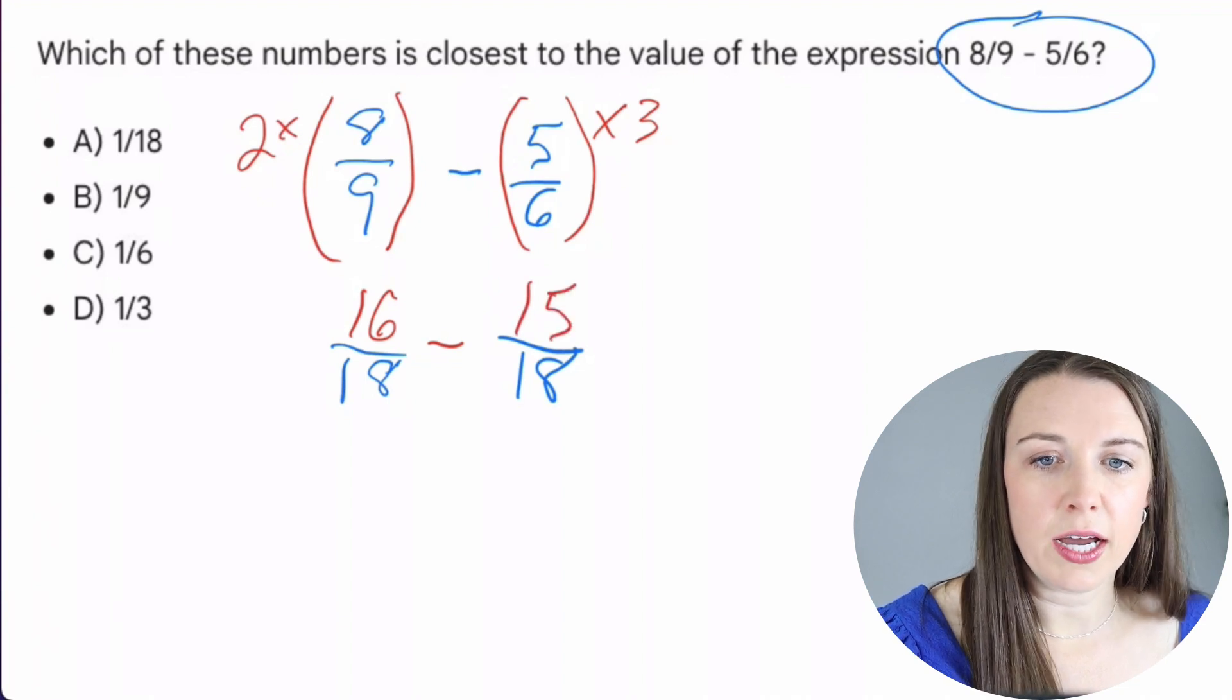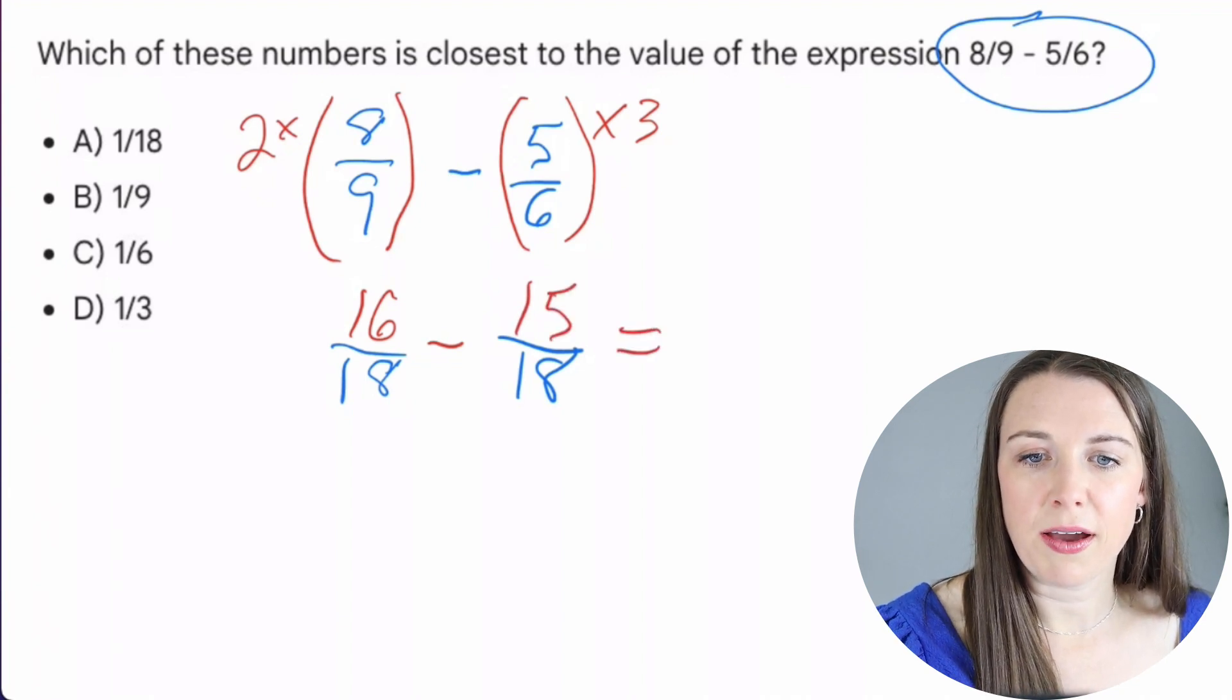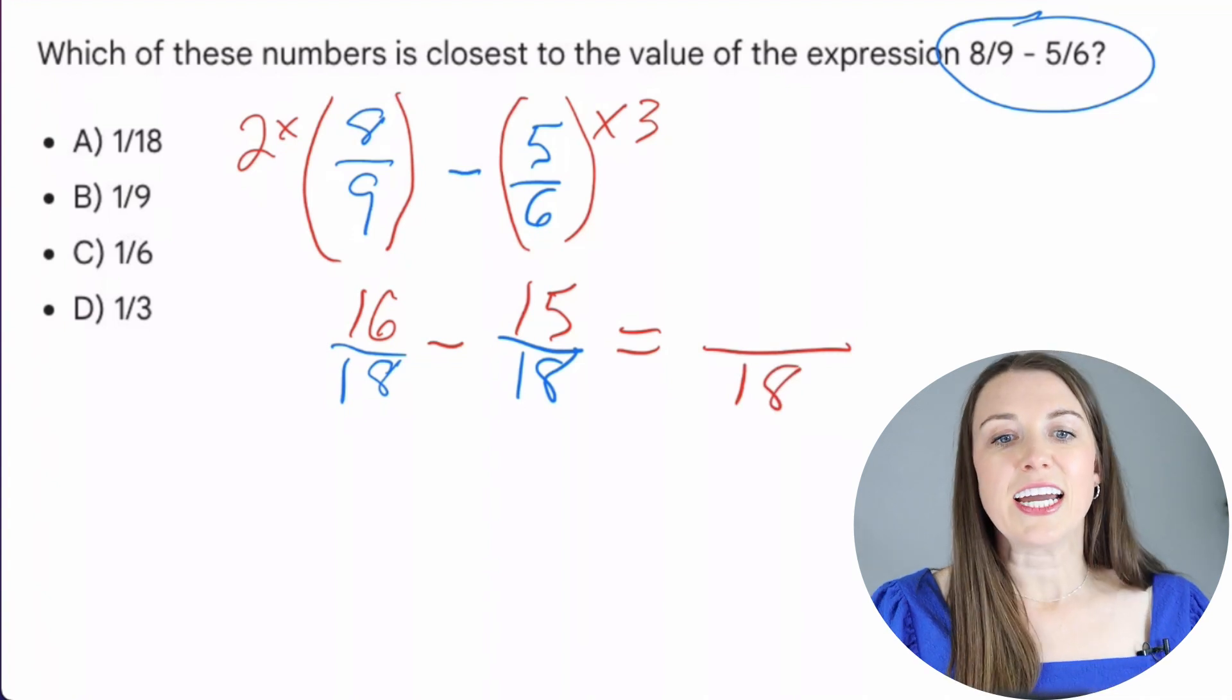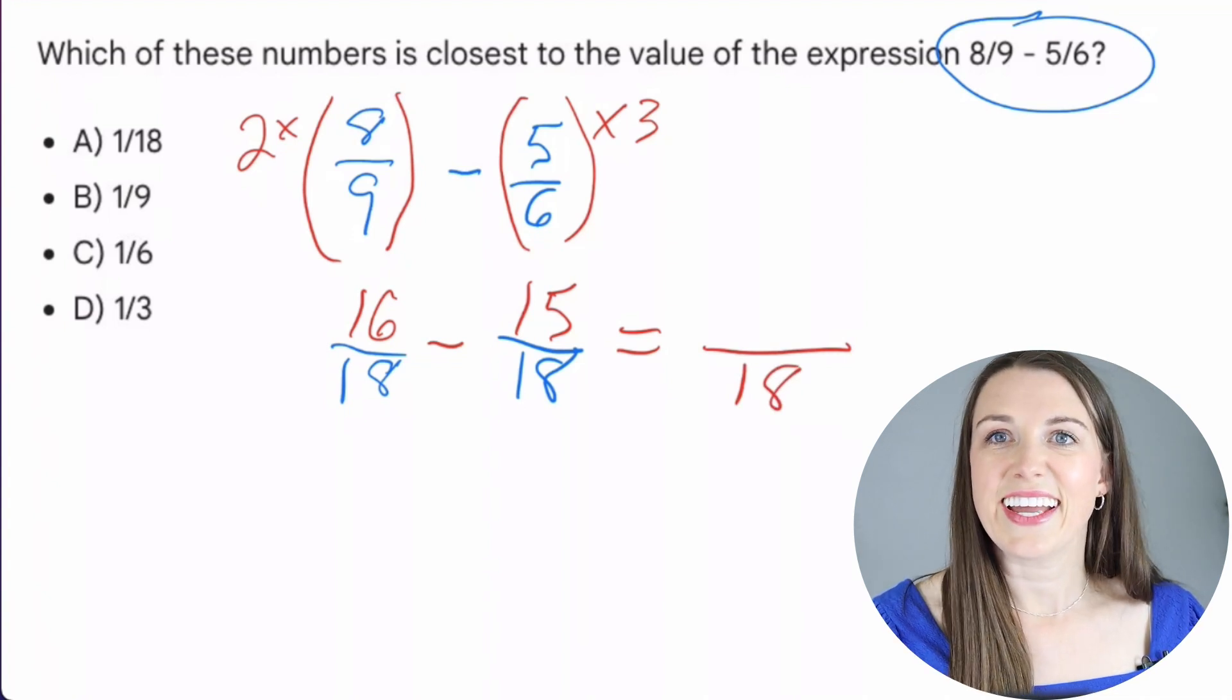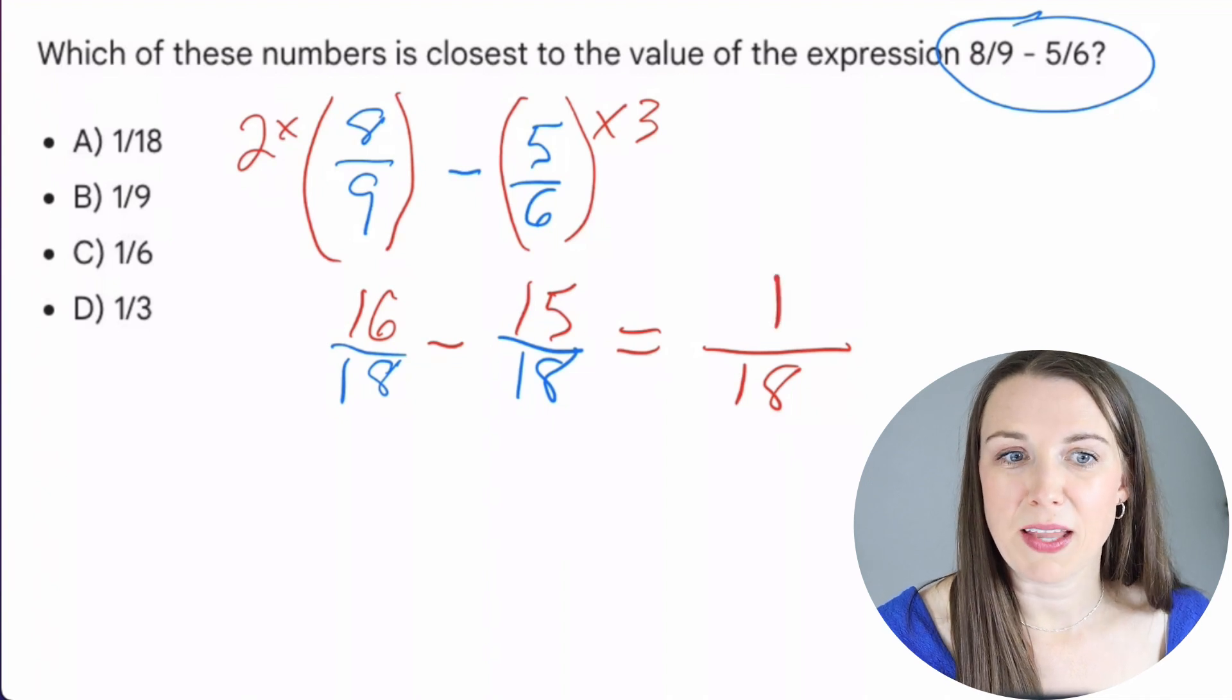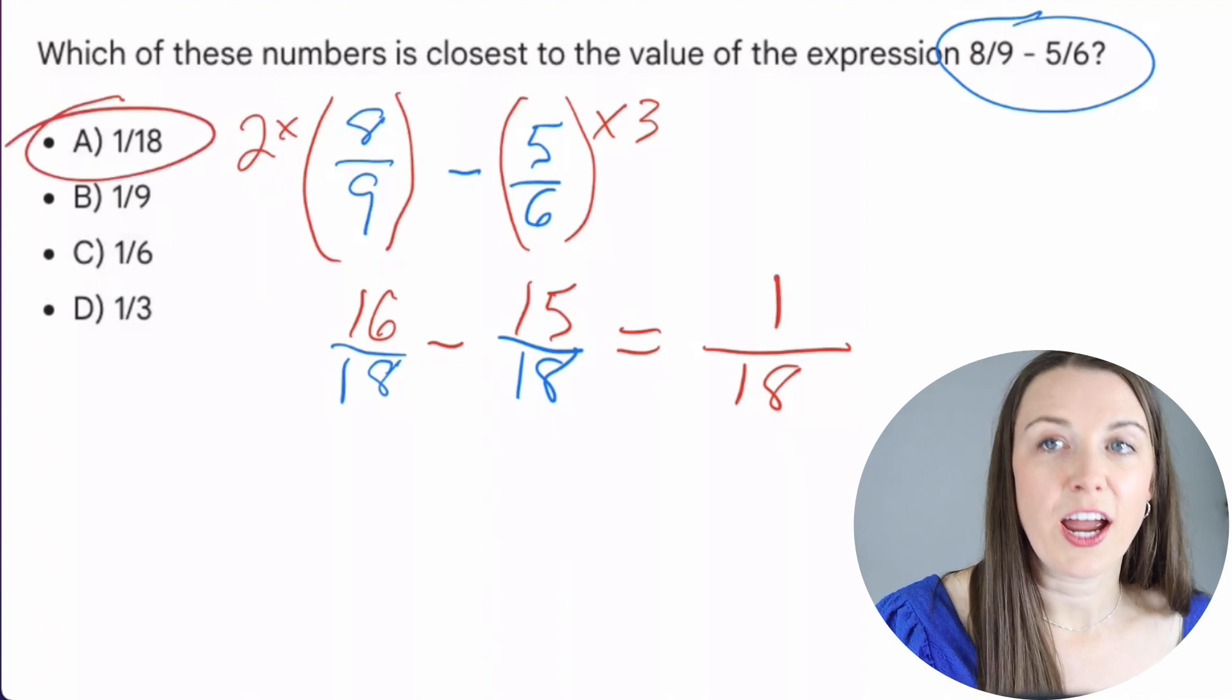And now I just keep my 18 on the bottom, my denominator and find my numerator. I go 16 - 15 is simply going to be one. And there's my answer A.